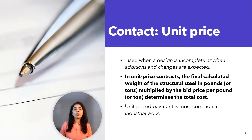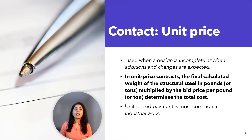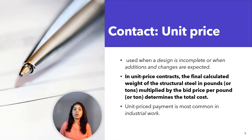Another basis of payment is unit price, frequently used when a design is incomplete or when additions and changes are expected. In a unit price contract, the final calculated weight of the structural steel in pounds or tons multiplied by the bid price per pound or ton determines the total cost. Unit price payment is most common in industrial work.